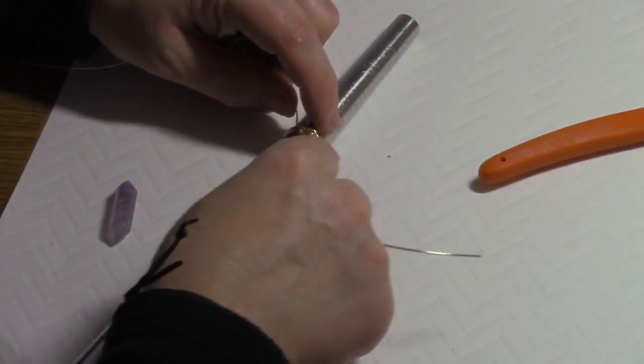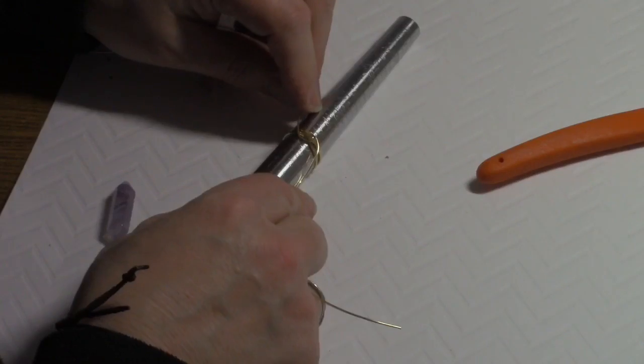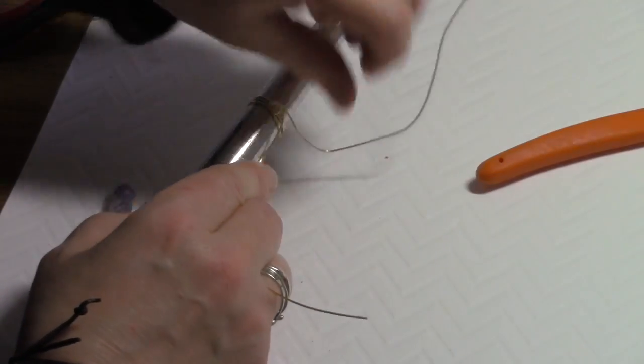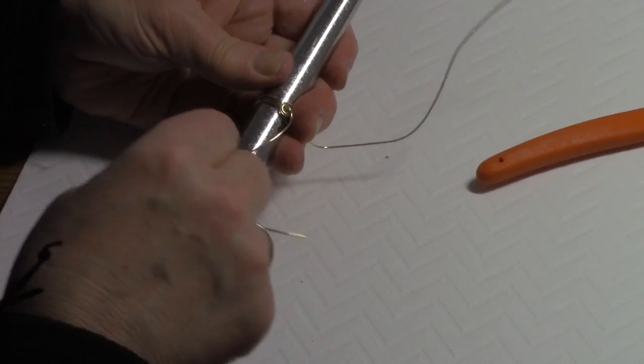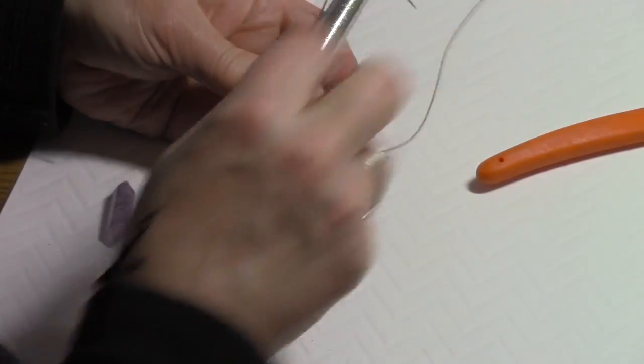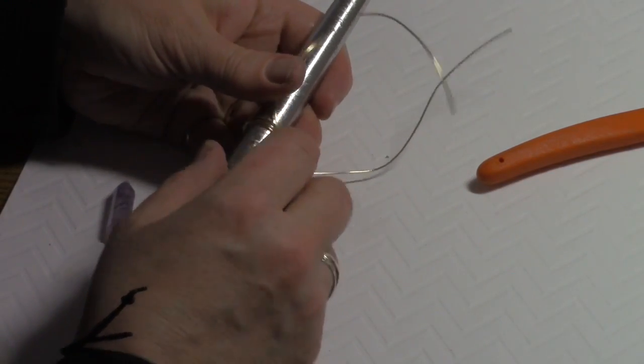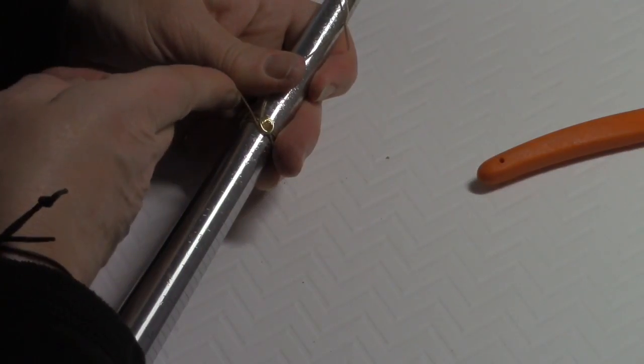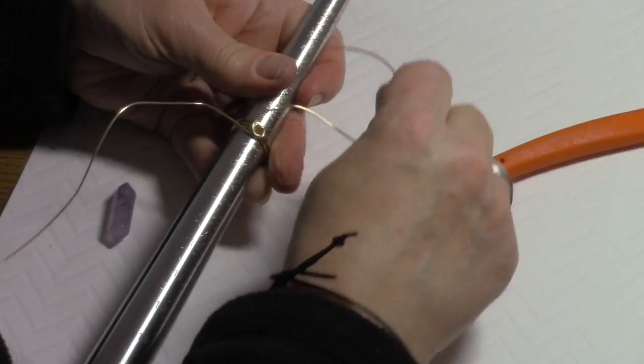And then just go again. And you'll notice sort of like a little bit of a swirl forming in the center. So just continue to work around. And what you're doing is you're just laying the wire alongside the wire that you've already done. You're not going over it. You're going beside it. So you're going beside it like this.